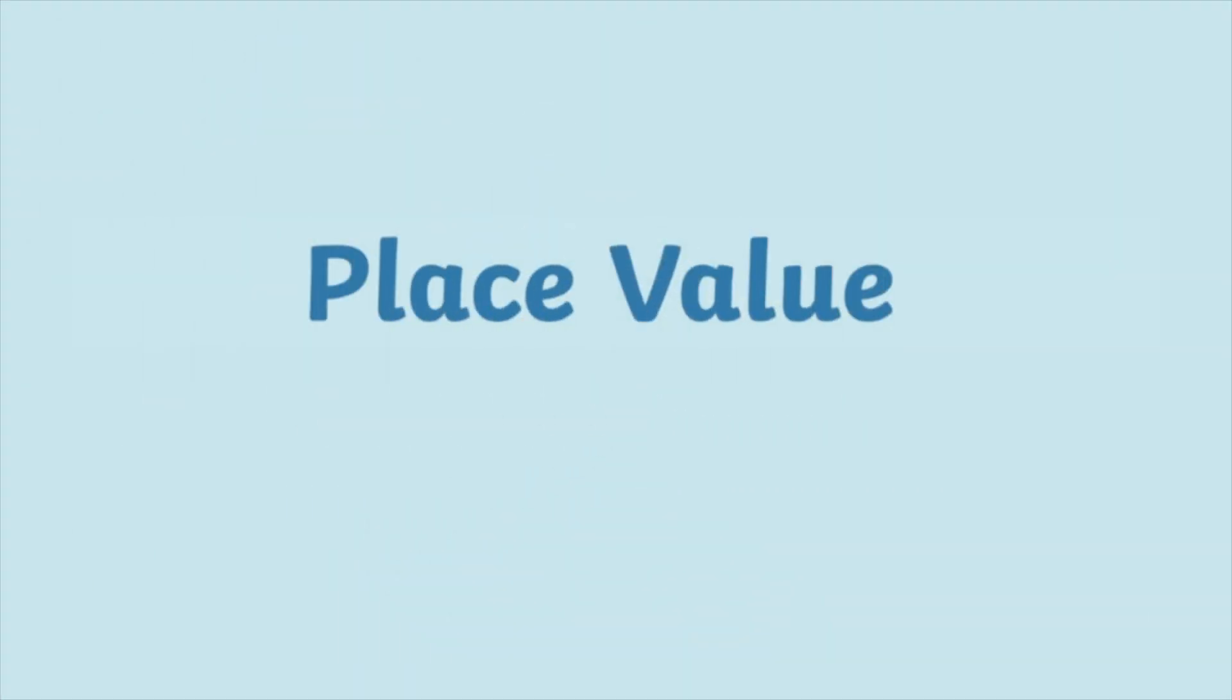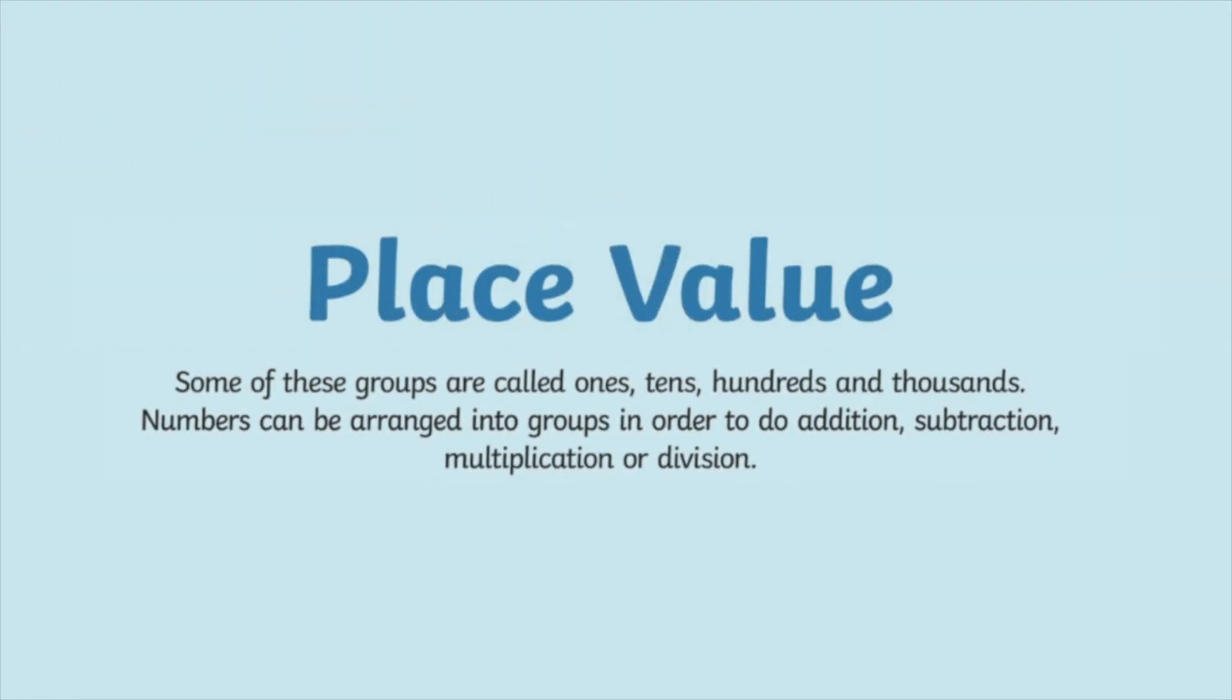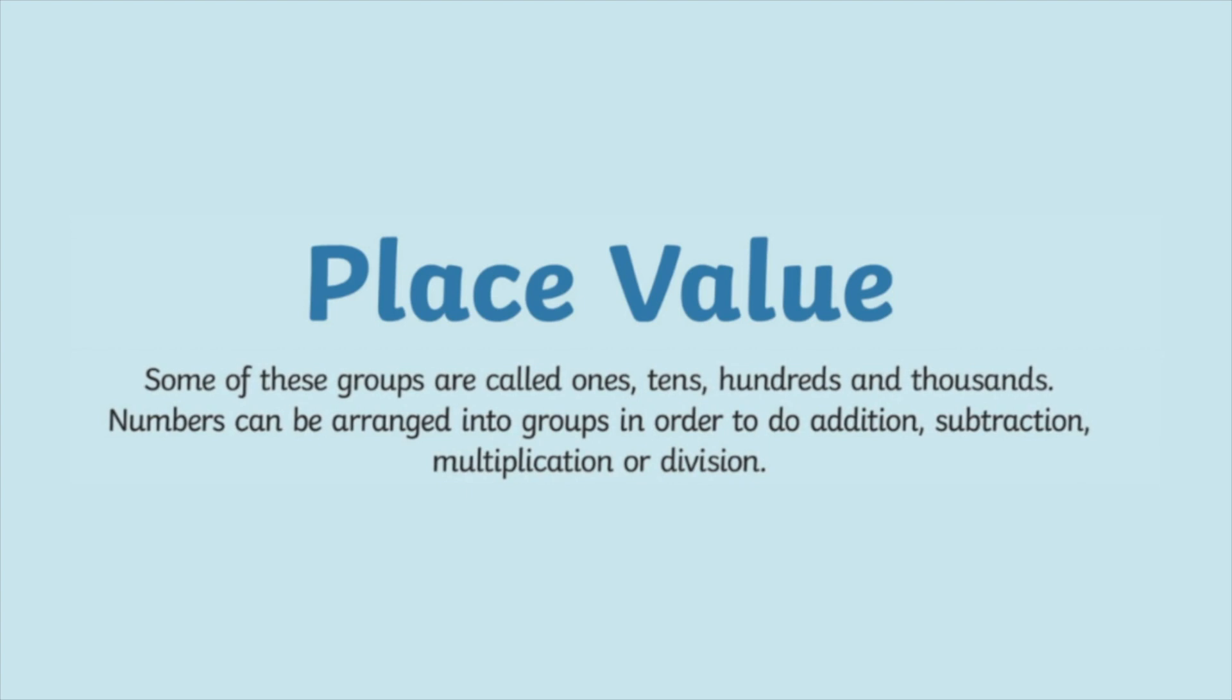To make this clearer, we can use place value columns or grids. Some of these groups are called ones, tens, hundreds, and thousands.